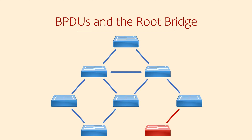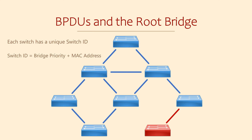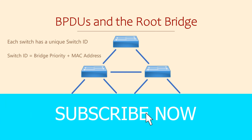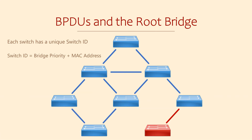As each switch needs to know about other switches, they need unique ways to identify themselves, and this is through the switch ID. This is made up of two values: the Bridge Priority and the switch's MAC address. Switches can have more than one MAC address, but they will select one to represent the switch as a whole. Cisco's term for this is called the Base MAC.